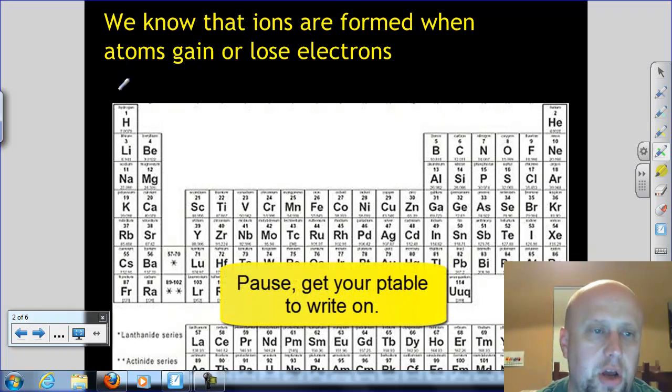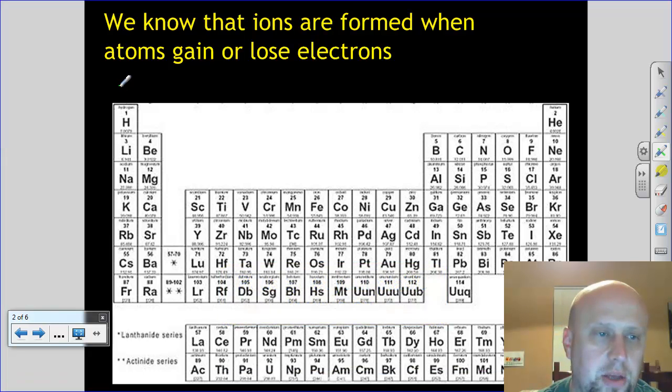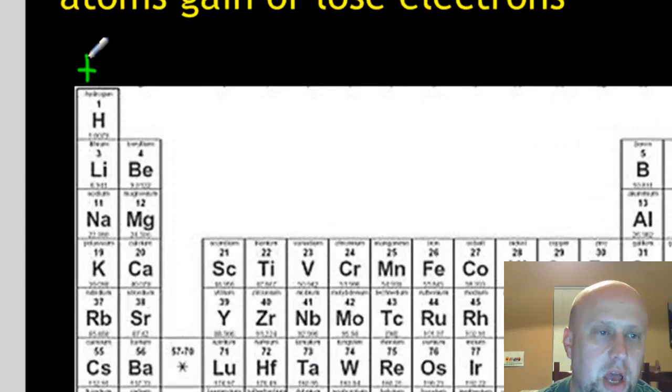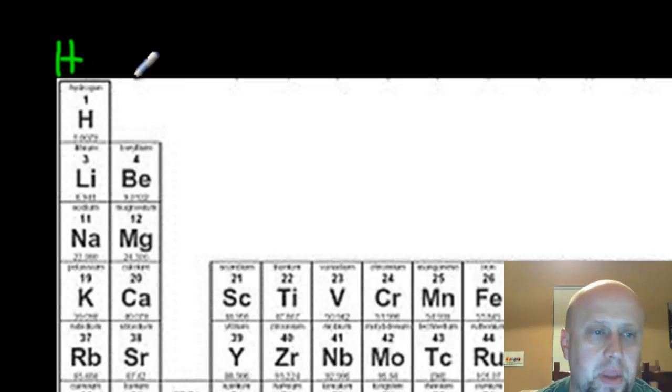For instance, we can know the charge on a lot of things just by using the table. Everything that is in the first column has a 1 plus charge. Everything in the second column has a 2 plus charge. So those are alkali metals, alkali earth metals.